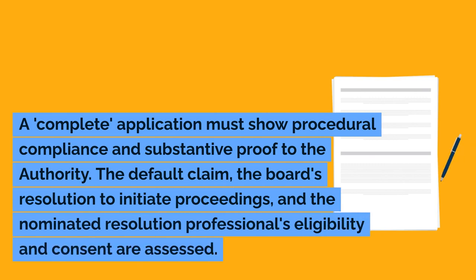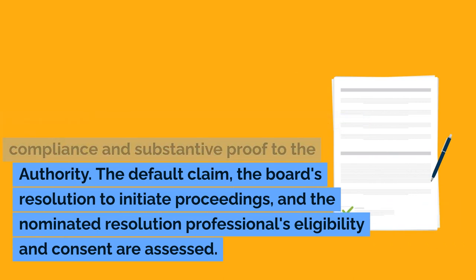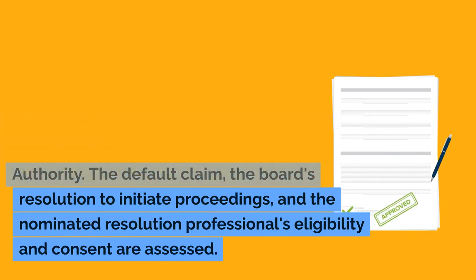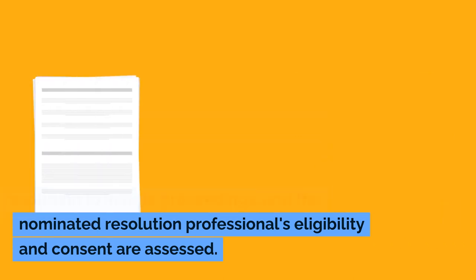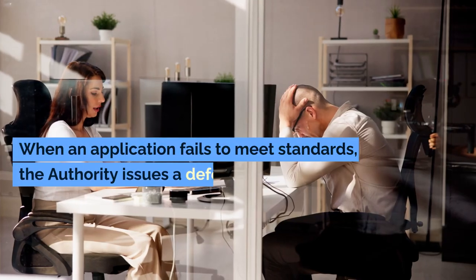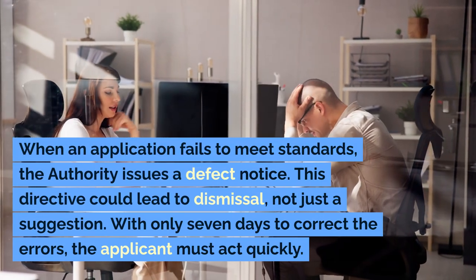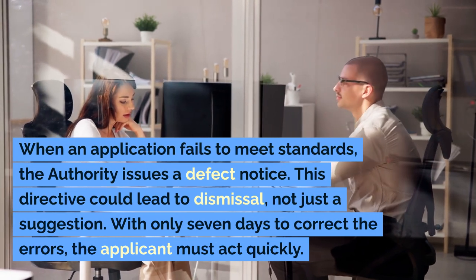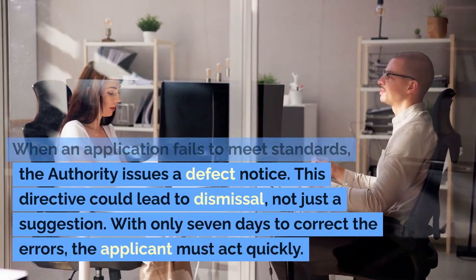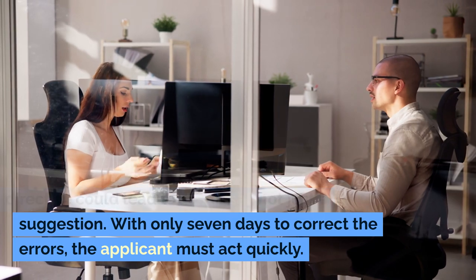A complete application must show procedural compliance and substantive proof to the authority. The default claim, the board's resolution to initiate proceedings, and the nominated resolution professional's eligibility and consent are all assessed. When an application fails to meet standards, the authority issues a defect notice — this directive could lead to dismissal. With only seven days to correct the errors, the applicant must act quickly.